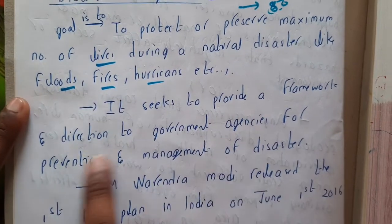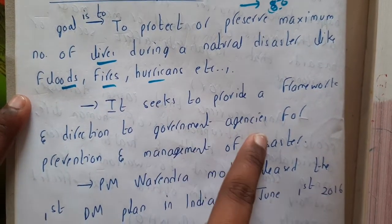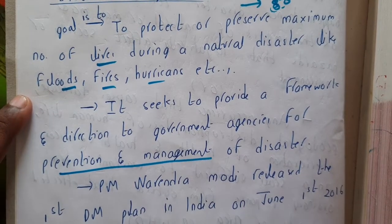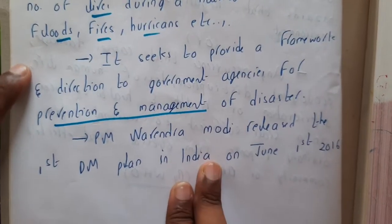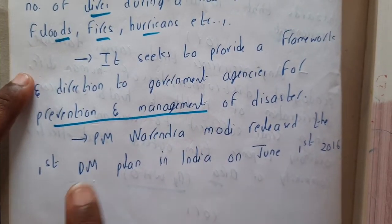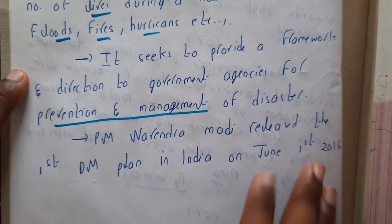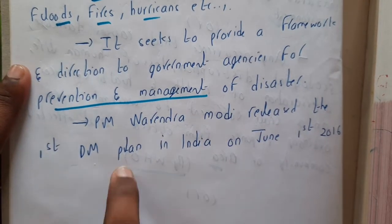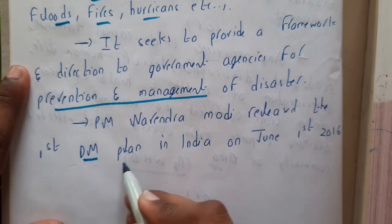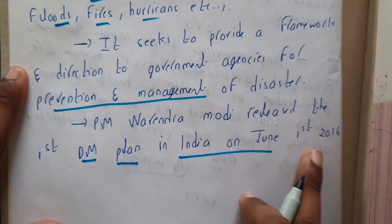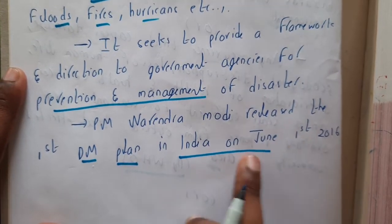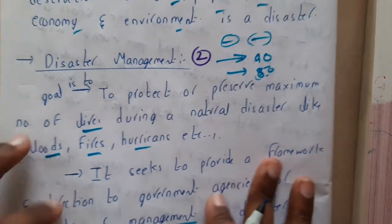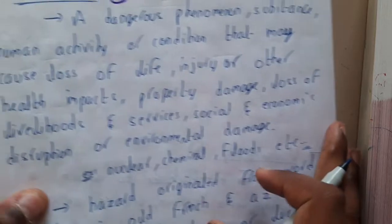Disaster management seeks to provide a framework and direction to government agencies for prevention and management of disasters. The first act in India was published on June 1st, 2016, when PM Narendra Modi released the first Disaster Management Plan in India.